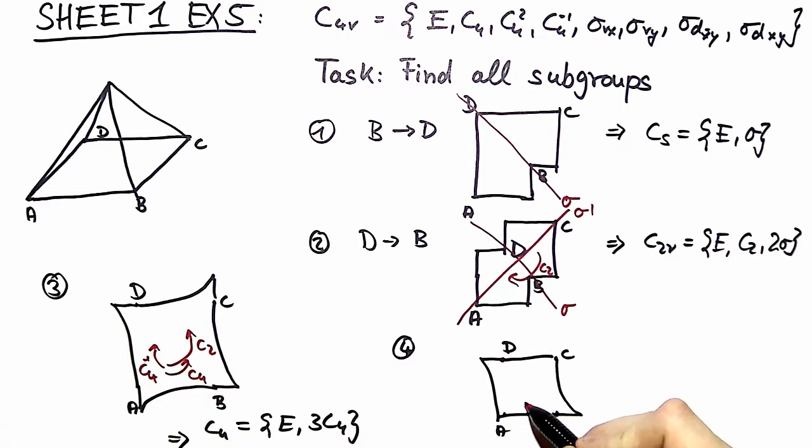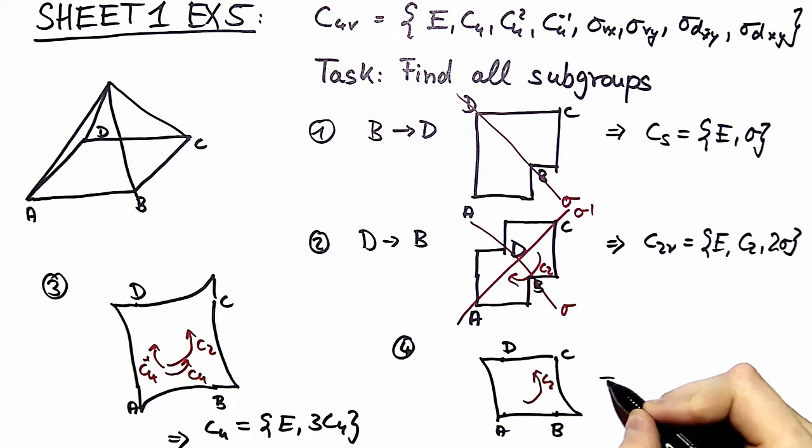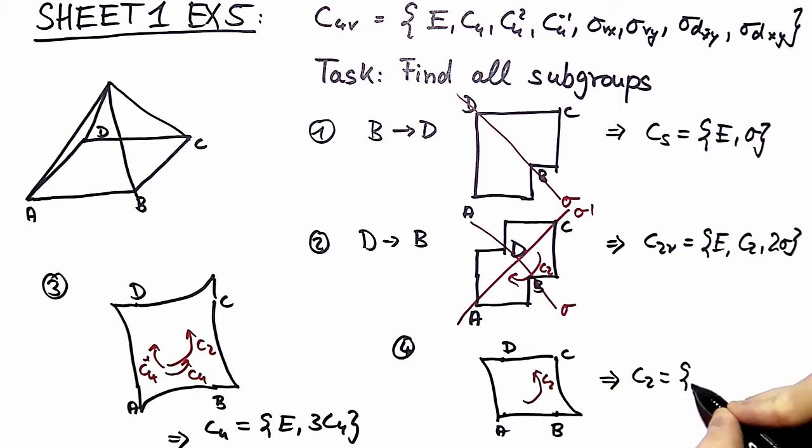In this object we have only C2 symmetry, and this subgroup is essentially called C2 and it consists of the identity and the element C2.